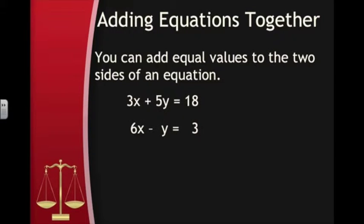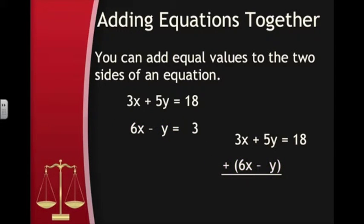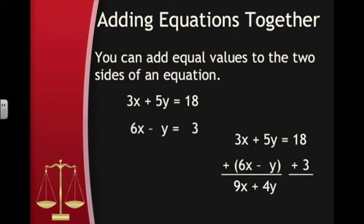Consider the system of equations 3x plus 5y equals 18 and 6x minus y equals 3. Since 6x minus y equals 3, we could add the 6x minus y to the left side of the first equation. 3x plus 6x equals 9x, and 5y minus y equals 4y, so we get 9x plus 4y. At the same time, we can add 3 to the right side of the first equation to get 21.